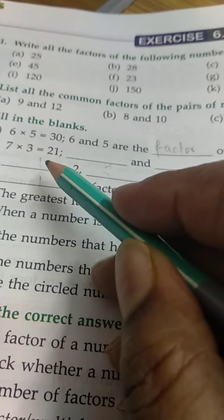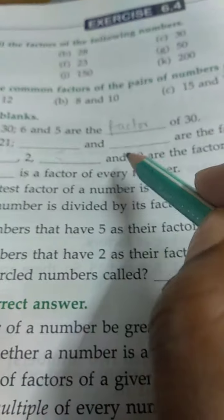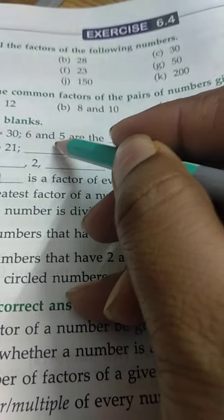Next. 7 into 3 goes to 21. So 7 and 3 are the factors of 21. And for 10, the factors are 1, 2, 5. Which is a factor of every number? That is 1.